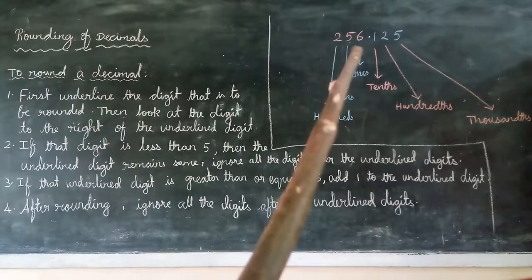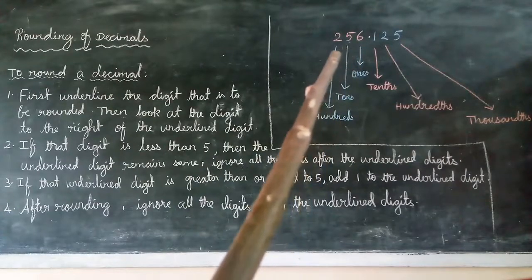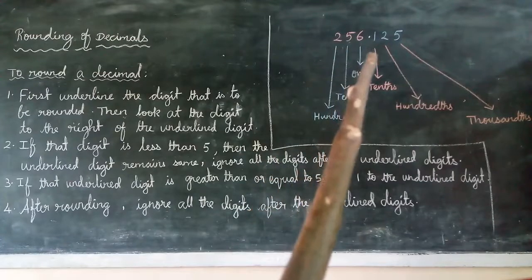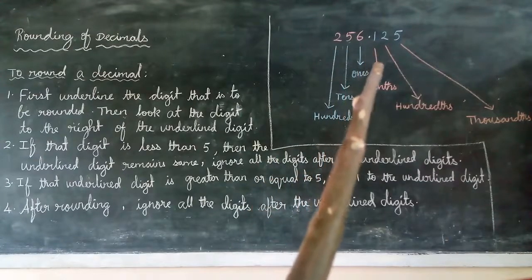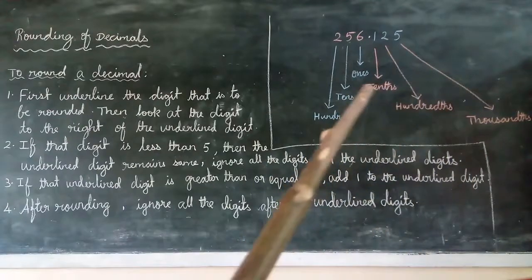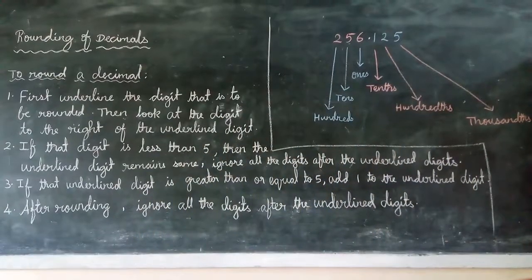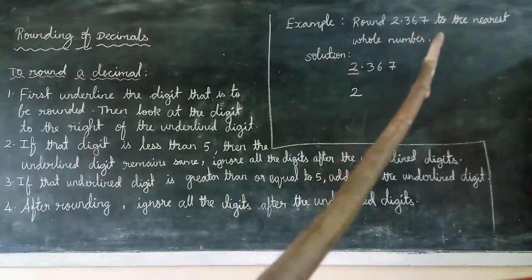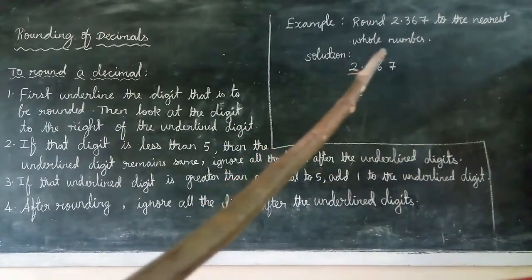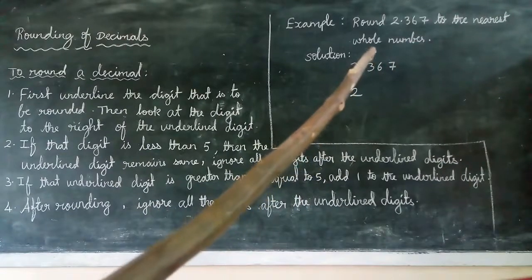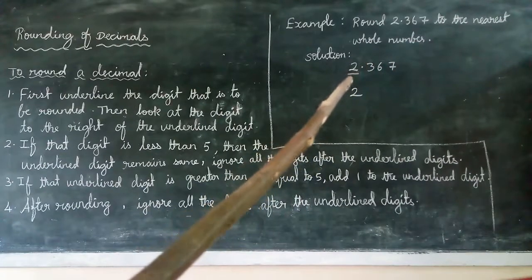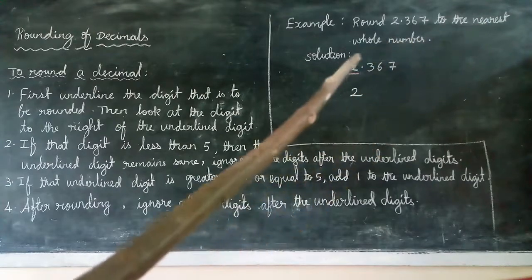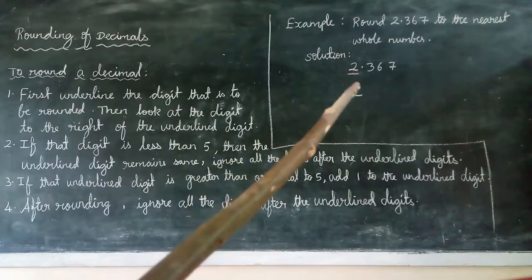In the integral part, place values increase towards the left side. In the decimal part, place values increase towards the right side: tenths, hundredths, thousandths. Now see this example: round 2.367 to the nearest whole number. Nearest whole number means we round to the ones place — the ones digit in the integral part.